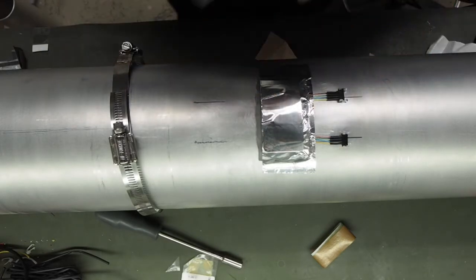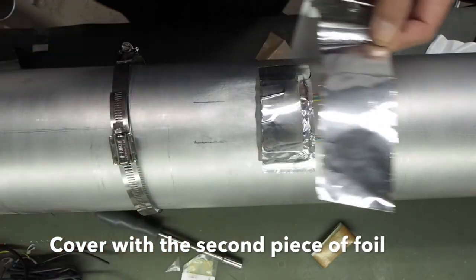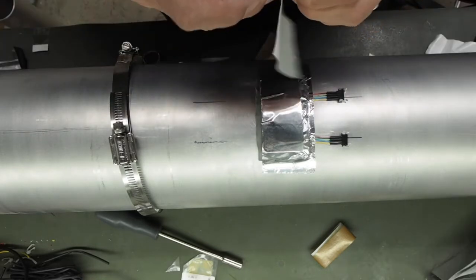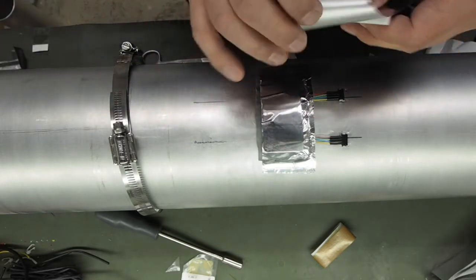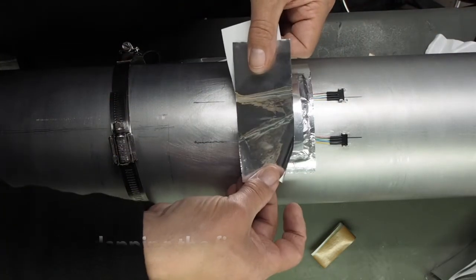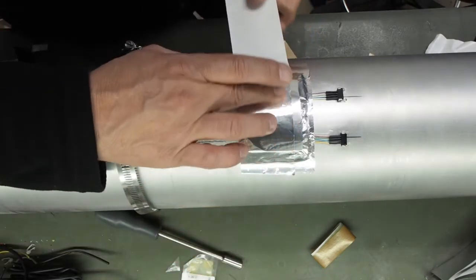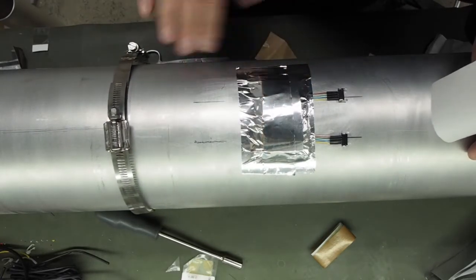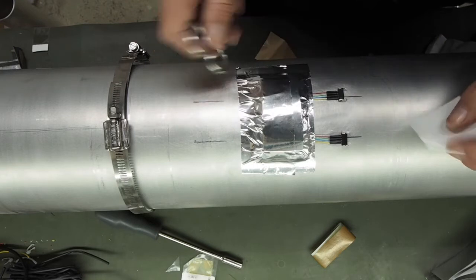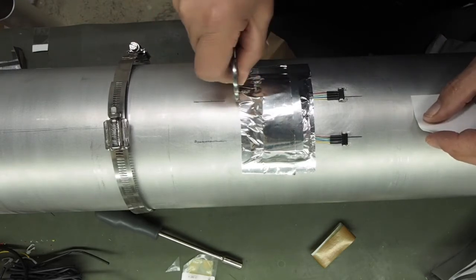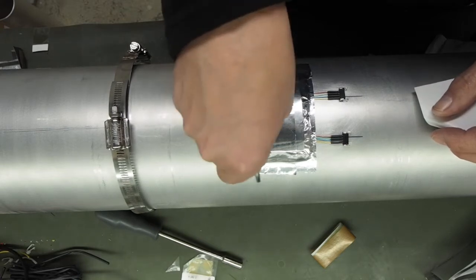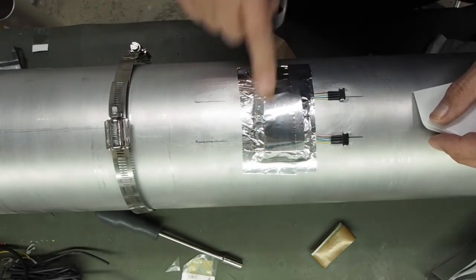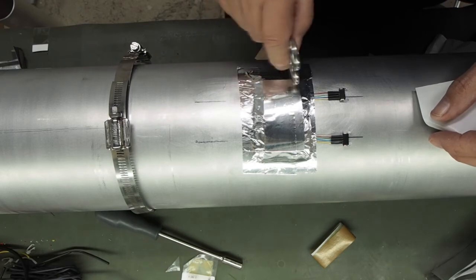And then the second piece we want, same size. And then we want to overlap that. And again with the scissors, just gently smooth out and make sure all the edges are tight down.